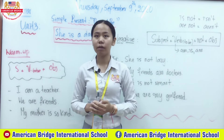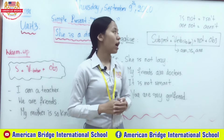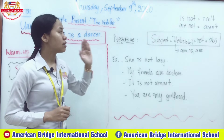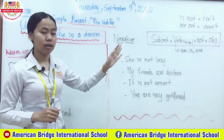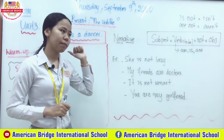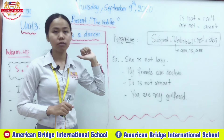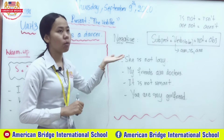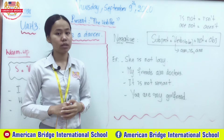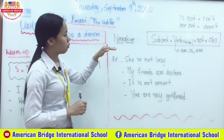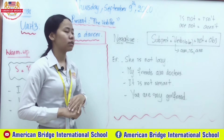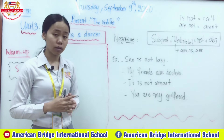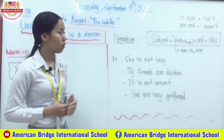Today in our first session we are going to look at the negative form of the simple present with the verb 'to be.' Last time we finished the positive or affirmative form, and today we move on to the negative form of the simple present with the verb 'to be.'